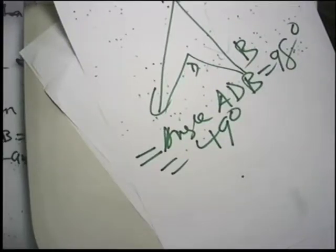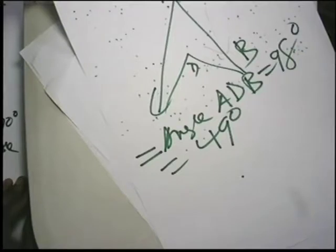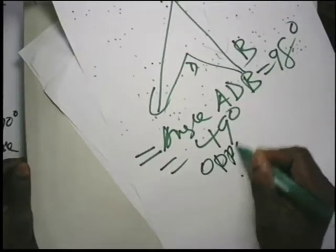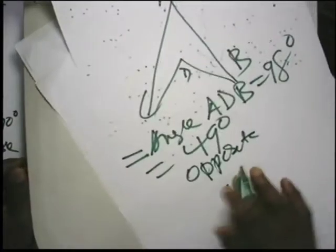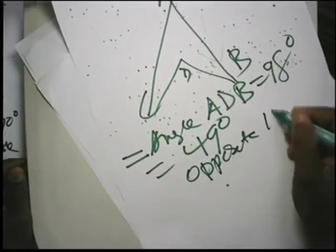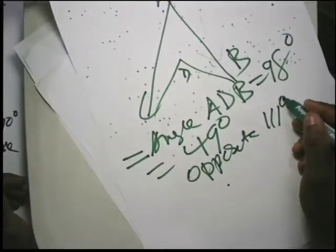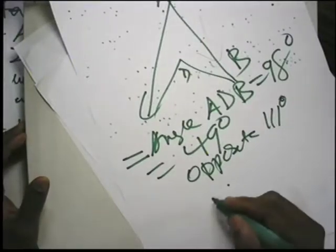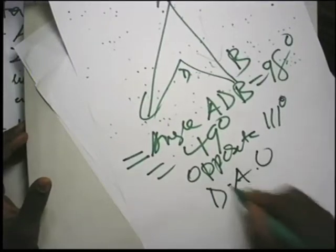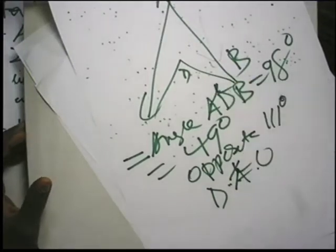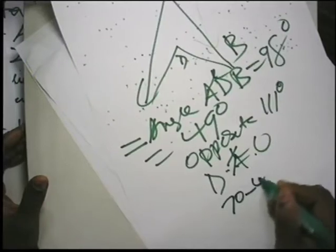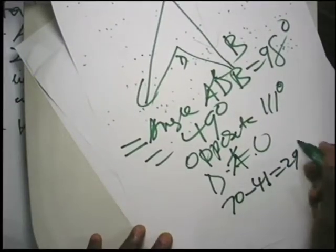The reason angle DAB is 70 degrees is because angles opposite to each other in a cyclic quadrilateral add up to 180 degrees. Since angle DCB is 110 degrees, the opposite angle DAB is 70 degrees. Then, to find angle DAO, we calculate 70 minus 41, which equals 29 degrees.